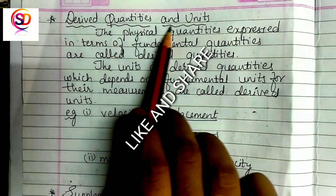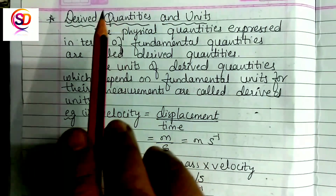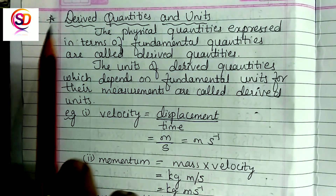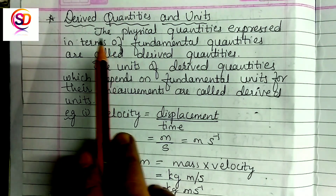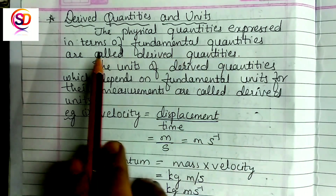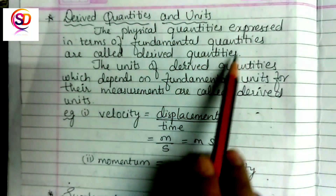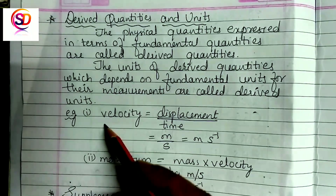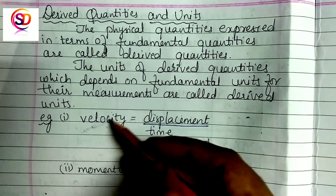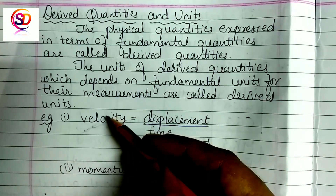Now, derived quantities and units. The physical quantities expressed in terms of fundamental quantities are called derived quantities. These quantities depend upon other quantities for their measurement. For example, velocity equals displacement divided by time — velocity is a physical quantity expressed in terms of two other physical quantities, so it is called a derived quantity.